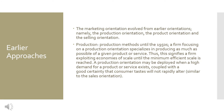Earlier approaches: the marketing orientation evolved from earlier orientations, namely the production orientation, the product orientation, and the selling orientation. Production methods — until the 1950s, a firm focusing on a production orientation specializes in producing as much as possible of a given product or service, exploiting economies of scale until the minimum efficient scale is reached. A production orientation may be deployed when a high demand for a product or service exists, coupled with a good certainty that consumer tastes will not rapidly alter, similar to the sales orientation.